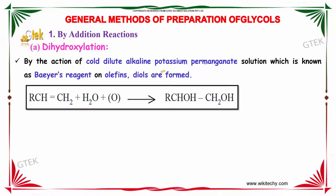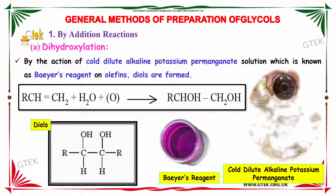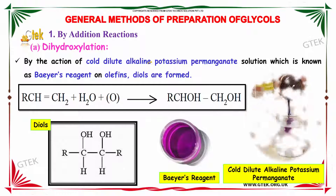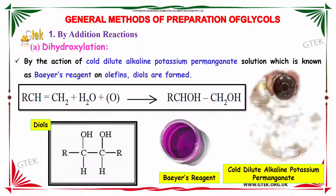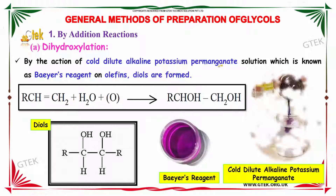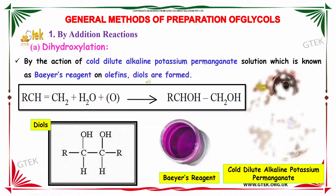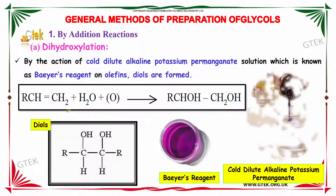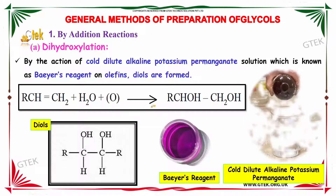Let us study about the general methods of preparation of glycols. The first type is by addition reactions, under which dihydroxylation is an important method. Dihydroxylation involves the action of cold dilute alkaline potassium permanganate solution, known as Bayer's reagent, on olefins. Ethane is taken and oxidized in the presence of water to form a diol (glycol).